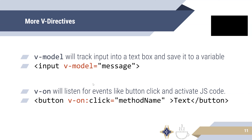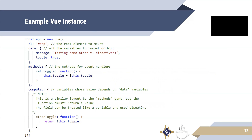And lastly, VON. VON listens for events like button click and activates JS code. VON listens for a button click and activates the function 'method name' — when that click happens, JavaScript runs the code inside that function. In the Vue instance, the basic elements are: data where we have all the variables, methods where we have functions without a return value, and computed where we have functions with a return value.